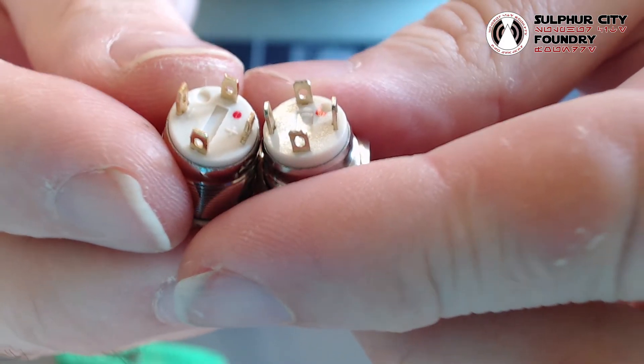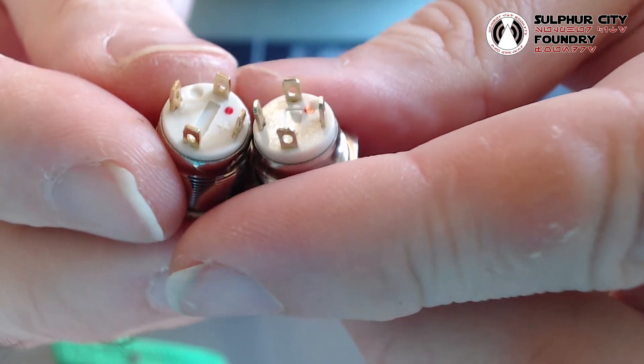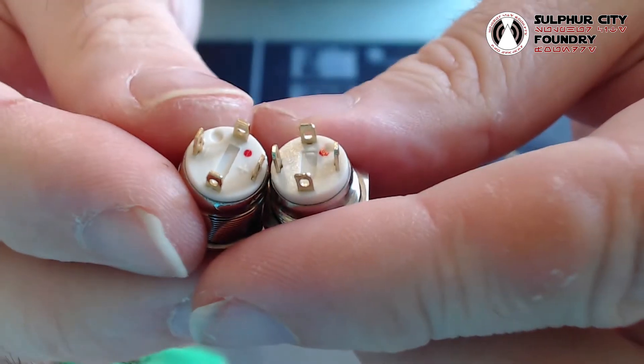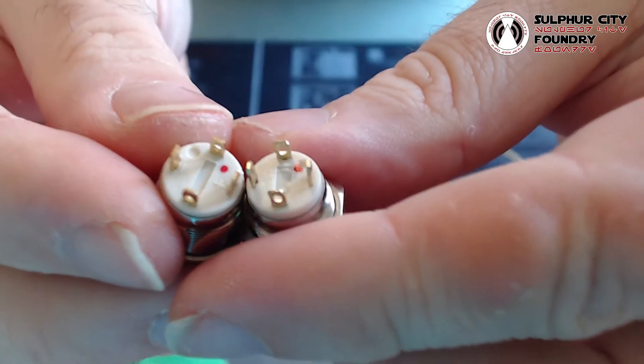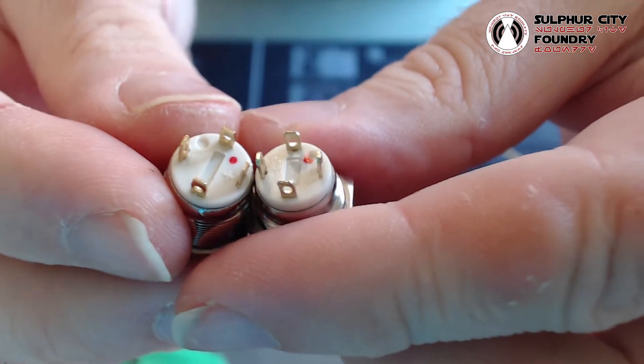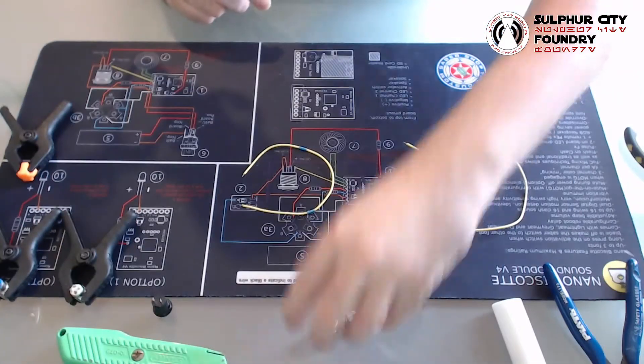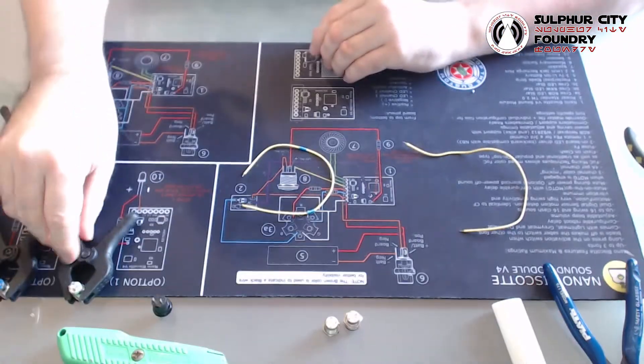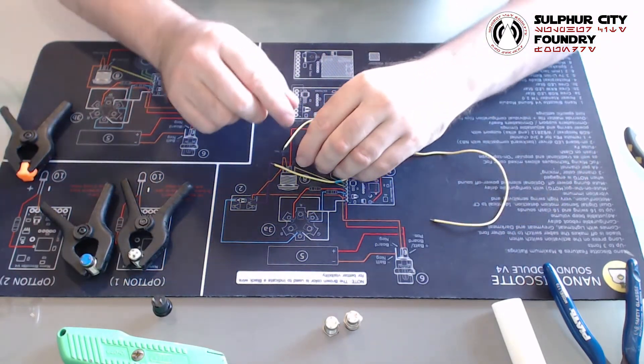When the switches come through, they come with nice full prongs just like so. What I'm going to be doing today is showing you two methods for working with these switches, soldering them and installing them in your saber. I'm going to be using a couple of junk switches so they look a little bit shabby. Don't worry, the technique is exactly the same for your nice clean ones.